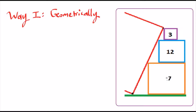Now we know the dimensions of each square. We have √3 by √3, 2√3 by 2√3, and 3√3 by 3√3. We can compute the gap: the difference between the orange and blue square sides is 3√3 minus 2√3, which is √3.